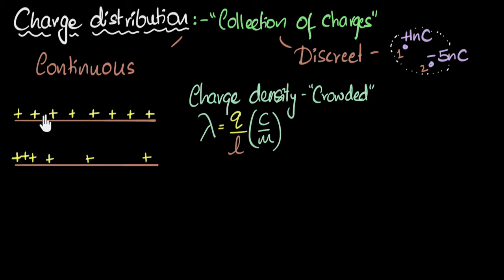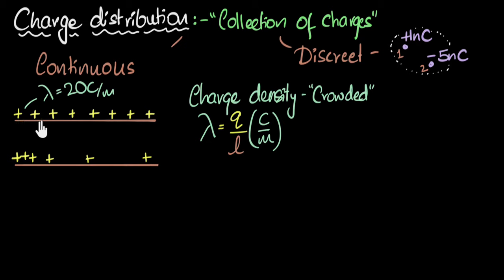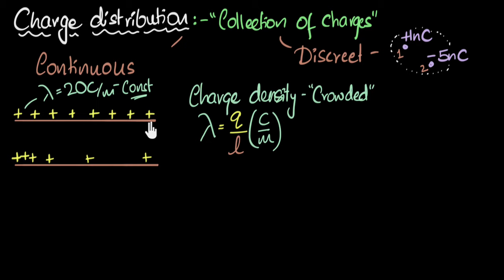For example, if the charge density of a wire is 20 coulombs per meter, that means if you take any one meter of this wire, you'll find 20 coulombs of charge in it. If you take two meters, you'll find 40 coulombs; if you take half a meter, you'll find 10 coulombs. The charge density is constant because the charges are equally crowded everywhere — it's a uniform distribution.